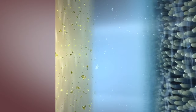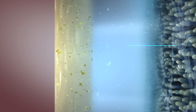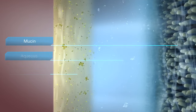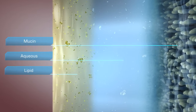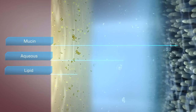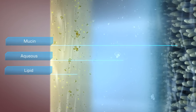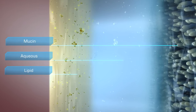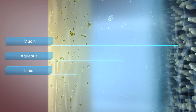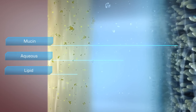The primary components of tears — mucin, aqueous, and lipid — combine to create a complex viscoelastic structure. This complex structure is responsible for a multitude of important functions.